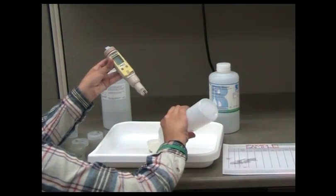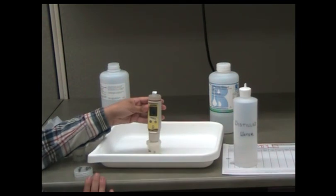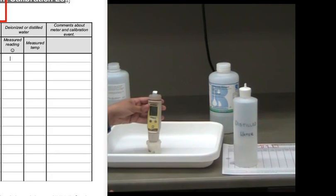Submerge the probe a fourth time in the 30-milliliter jar of distilled water. Allow the reading to stabilize. Record the measured specific conductance reading under the distilled or deionized water section on the calibration log.